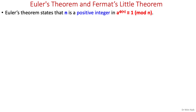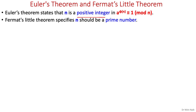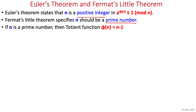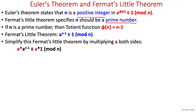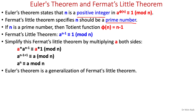Fermat's Little theorem is not a separate theorem — it's a special case of Euler's theorem. Euler's theorem states a to the power phi(n) is congruent to 1 mod n. Fermat's Little theorem specifies that n should be a prime number, and since phi(n) = n minus 1 for primes, we get a to the power n minus 1 is congruent to 1 mod n. Simplifying by multiplying both sides by a gives a to the power n congruent to a mod n. Therefore, Euler's theorem is a generalization of Fermat's Little theorem.